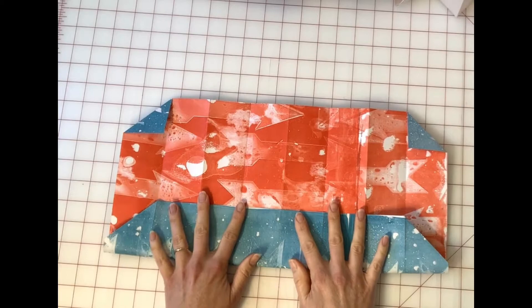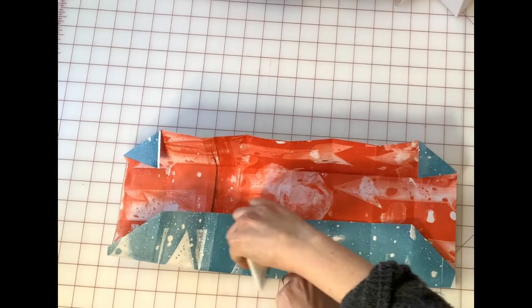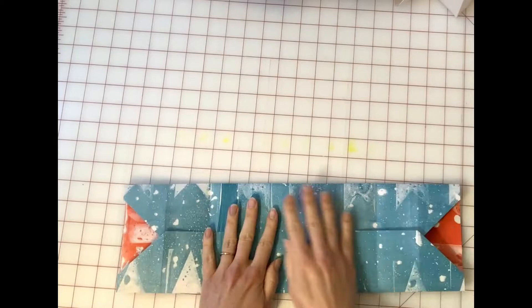Then take the bottom of the accordion and fold it up to the top mark. Crease well. And then the other side up to the mark that's closest to the top. So you should have an overlap of the two sections when you're done. And that's what creates the pockets.